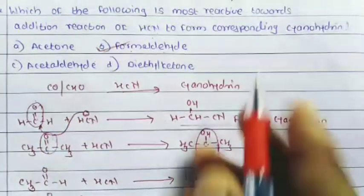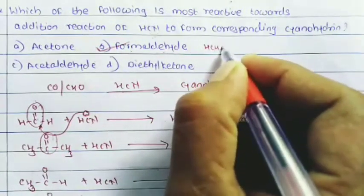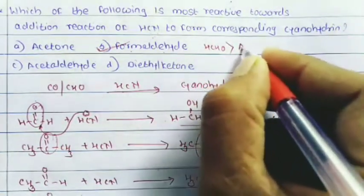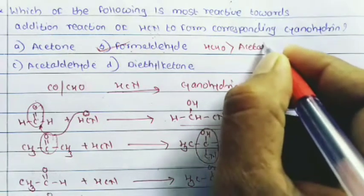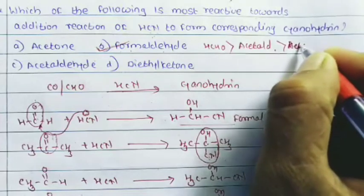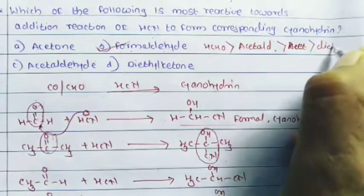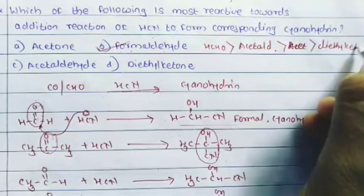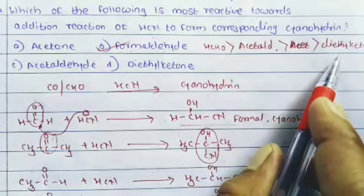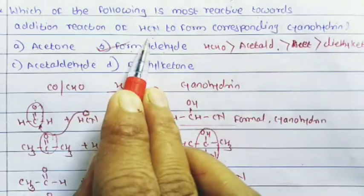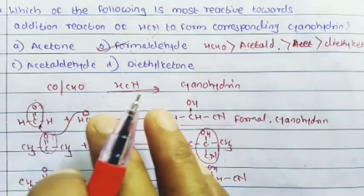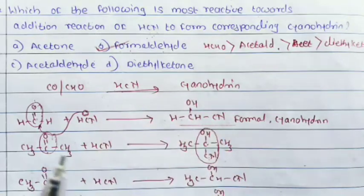The order of reactivity toward HCN addition is: formaldehyde (HCHO) > acetaldehyde > acetone > diethyl ketone. Formaldehyde is most reactive toward HCN addition to form the corresponding cyanohydrin. Today we stop here. These are organic chemistry questions asked in the MHT-CET exam 2018 question paper. Thank you so much.